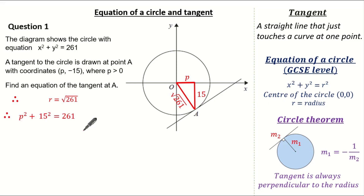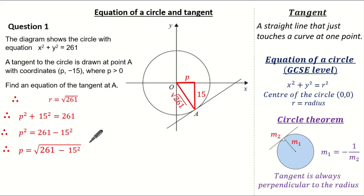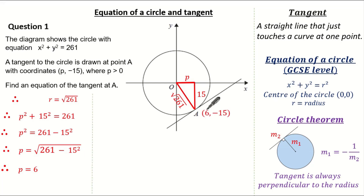Now I can solve for p. p squared equals 261 take away 15 squared. Working this out gives me p equal to 6. So now I know the coordinate of A is (6, -15).